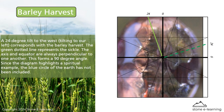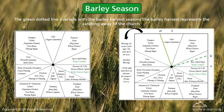A 24-degree tilt to the west, tilting to our left, corresponds with the barley harvest. The green dotted line represents the sickle. The axis and equator are always perpendicular to one another, forming a 90-degree angle. Since the diagram highlights a spiritual example, the blue circle of the earth has not been included. The green dotted line overlaps with the barley harvest season. The barley harvest represents the catching away of the church.